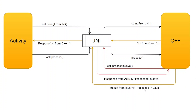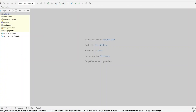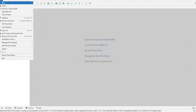This is the 'processed in Java' response from the `processInJava` method. Then C++ will also process it within itself and return the response to the JNI, and then JNI will return the response to the Activity which will be shown to the user. Let's start off with creating a new project.